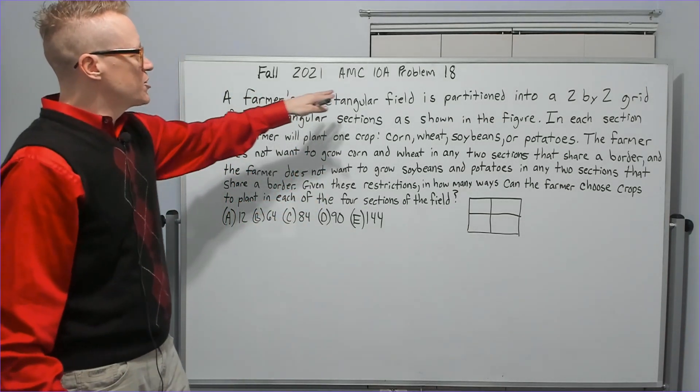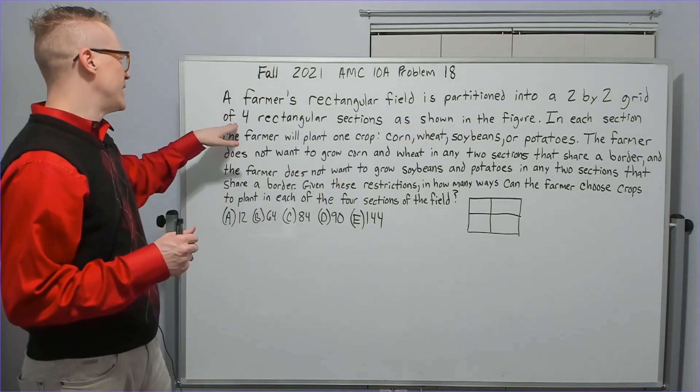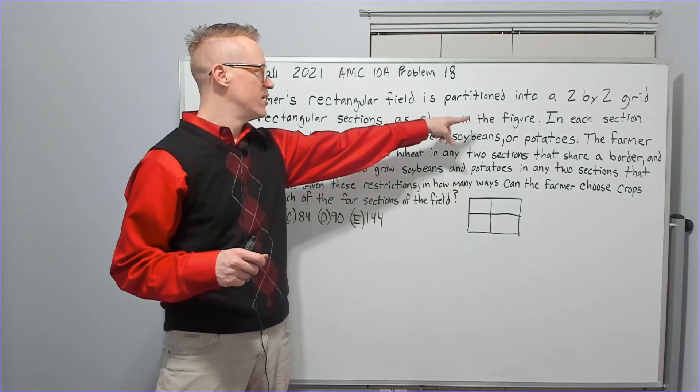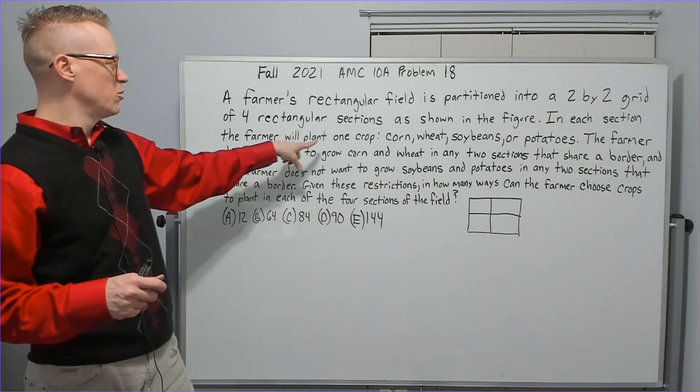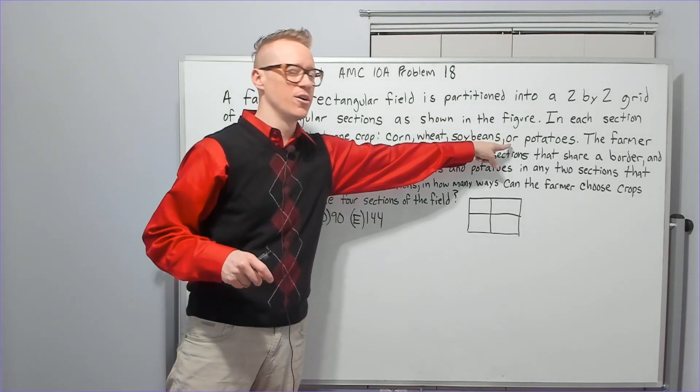A farmer's rectangular field is partitioned into a 2 by 2 grid of four rectangular sections as shown in the figure. In each section, the farmer will plant one crop: corn, wheat, soybeans, or potatoes.